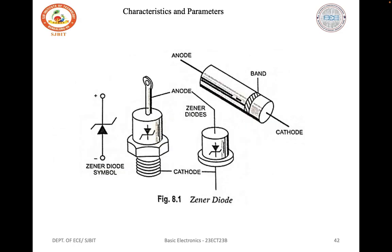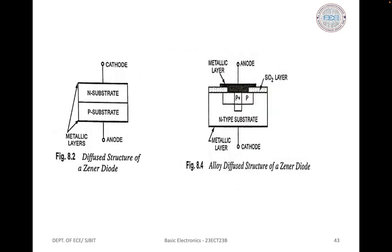Here we have different types of zener diodes and their symbols. This diagram shows the structure of a zener diode. One is the diffused structure, consisting of an n-type substrate connected to the cathode terminal and a p-type substrate as an extension of the anode with metallic layers. The other is the alloy-diffused structure, consisting of both p-type and n-type substrates, with a metallic anode layer and a silicon dioxide layer.